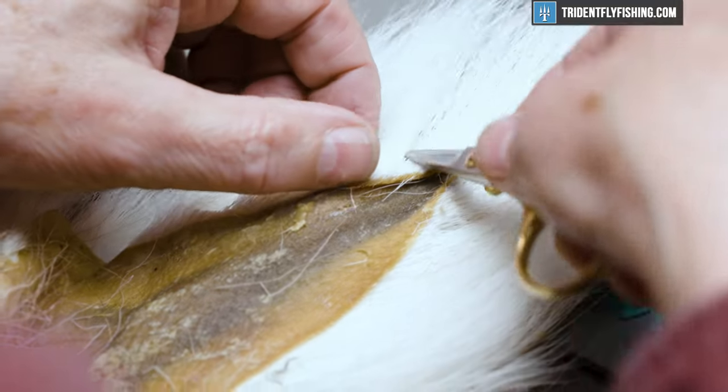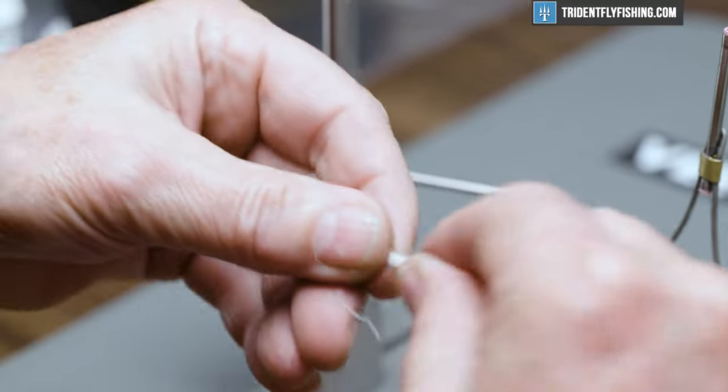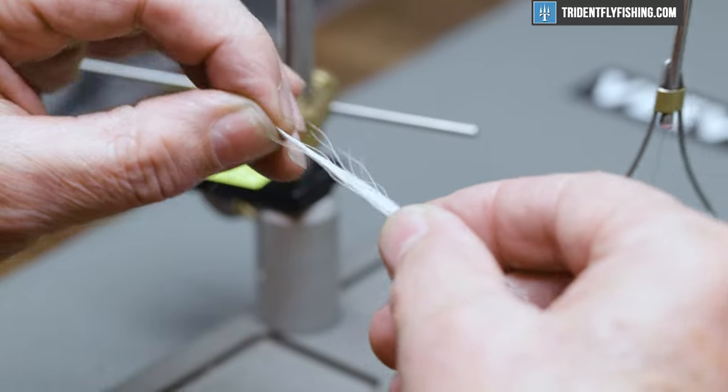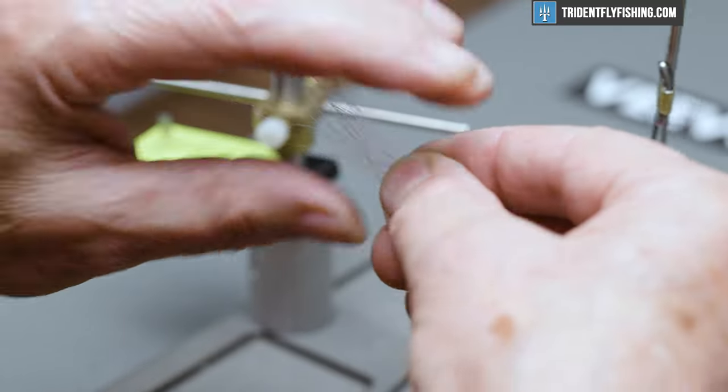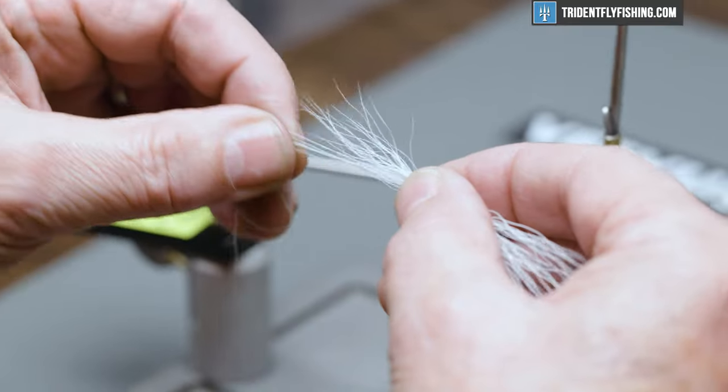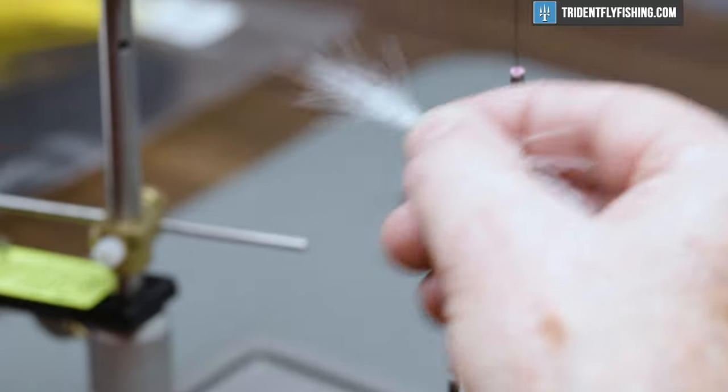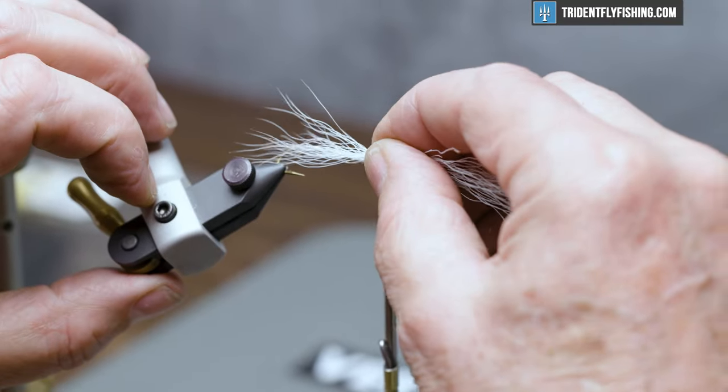Next we're going to tie in the belly of the fly. This is just some white bucktail, don't need a lot. I'll just kind of hand stack it. And we want this to extend just past the bend of the hook.